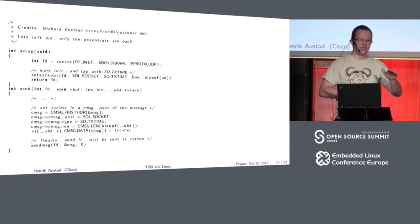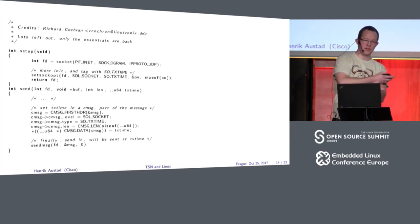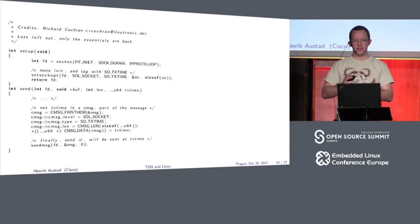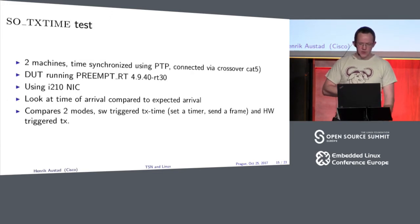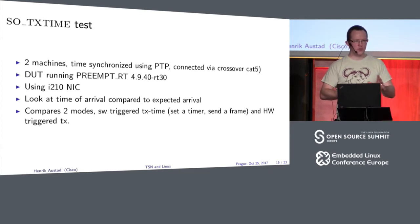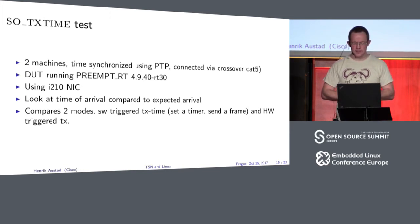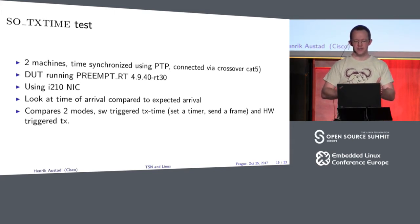There are also limitations around out-of-order frames — it won't sort them, so you have to be careful. This will probably improve greatly in the next set of patches. Richard also specified an impressive test: he took two machines connected through a crossover cable to avoid network interference, running preempt RT, using the i210 card, and measured the offset from when he expected frames to arrive. He did this in both pure software and hardware to show the difference. In the software column, you see a maximum difference of about 75 microseconds — pretty good — but the peak-to-peak variance is quite large. In the hardware-offloaded column, the peak-to-peak drops to 100 nanoseconds.